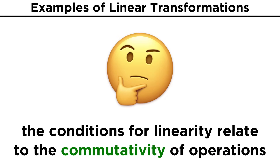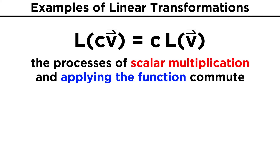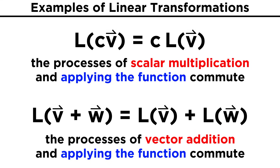As we might recognize, the conditions for linearity can be thought of as relating to the commutativity of operations. The first requirement is essentially saying that scalar multiplication and applying the function commute, and the second requirement is saying that vector addition and applying the function commute. This is just like the commutativity of adding or multiplying numbers — the order shouldn't matter.